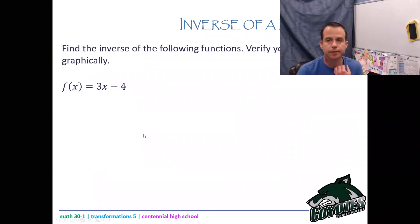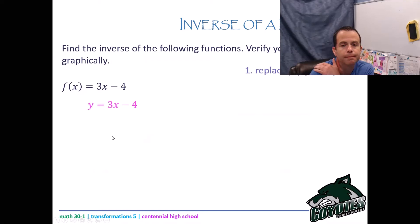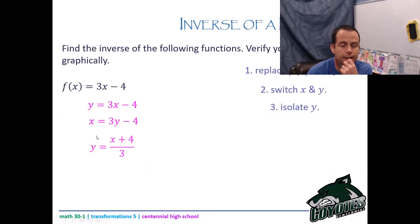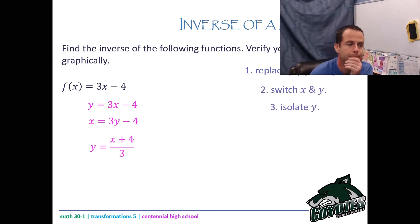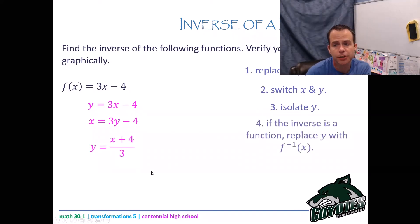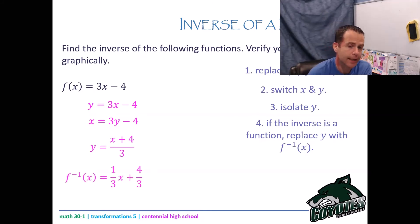Find the inverse of f of x equals 3x minus 4 and verify graphically. First, switch f of x to y. Then switch x and y — because when I take the inverse, x becomes y and y becomes x. Now solve for y: add 4 to both sides and divide by 3. This gives the inverse. Since it is just a line — y equals one-third x plus four-thirds — it is a function, so I can use inverse notation and write f to the negative 1 of x equals one-third x plus four-thirds. Graphically, the blue graph is the original, red is the inverse, and a third graph of y equals x shows the line of reflection.